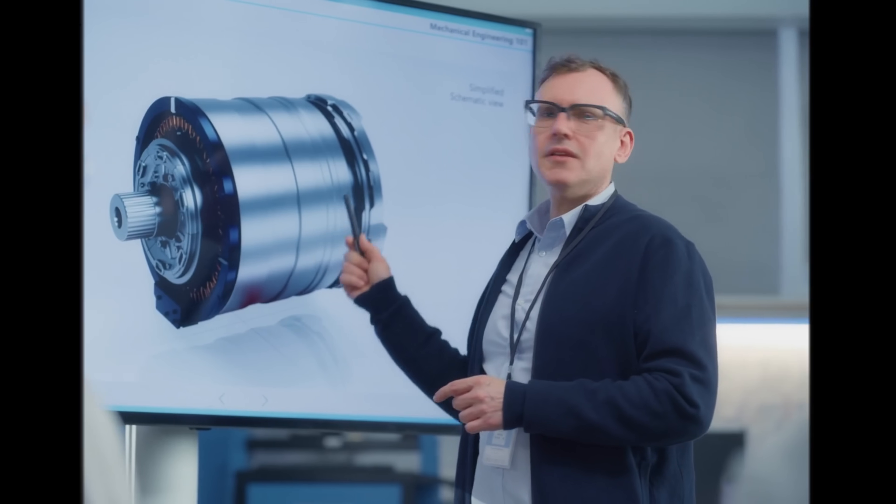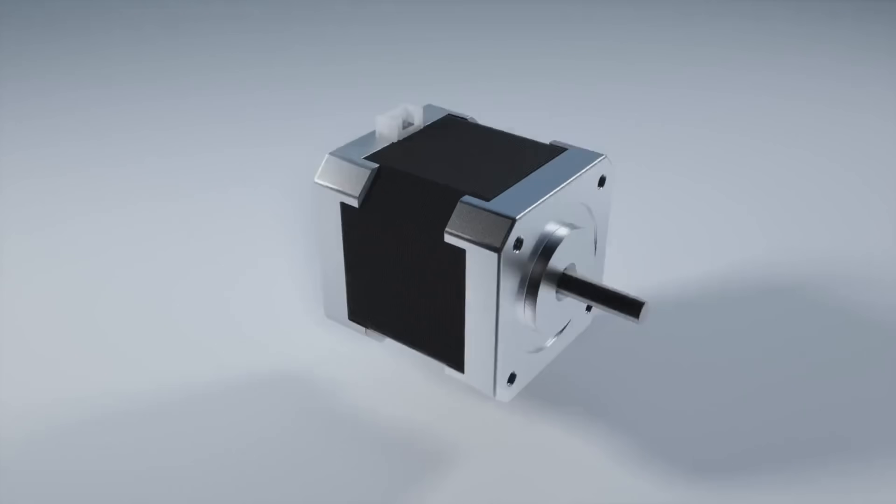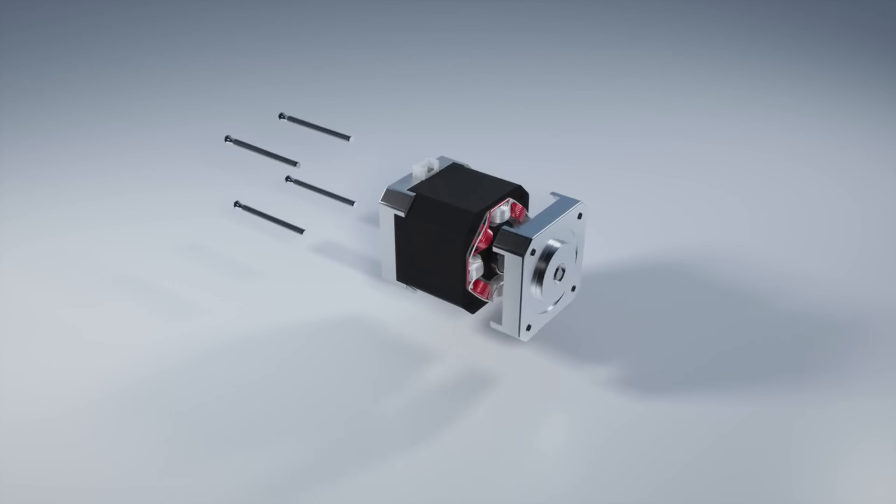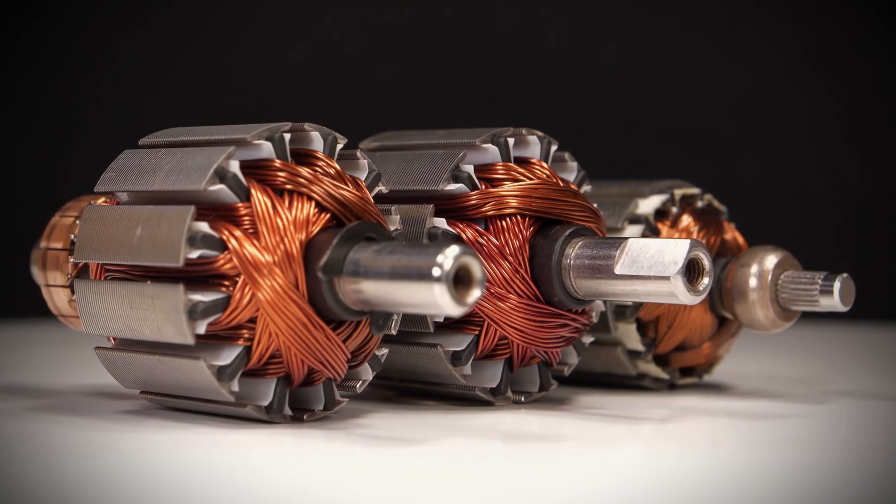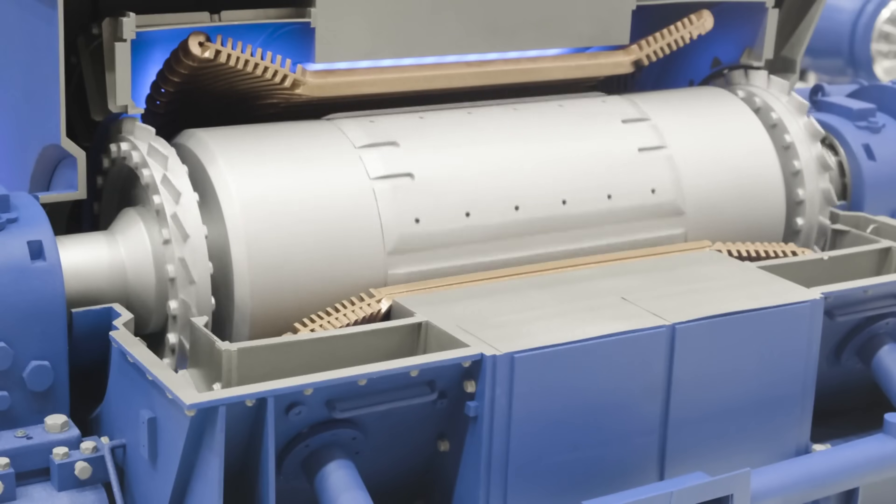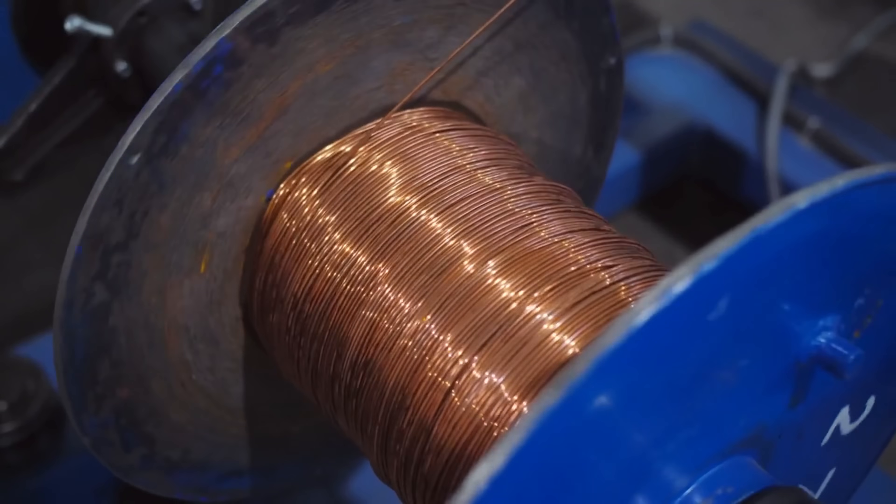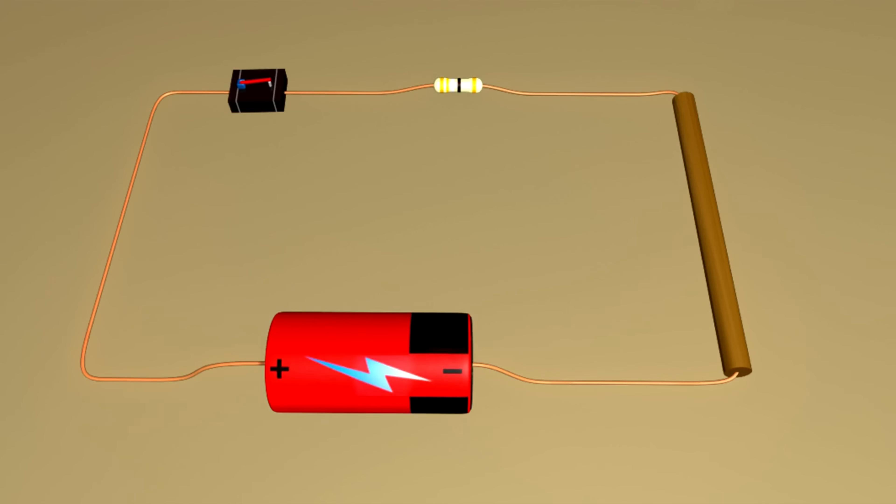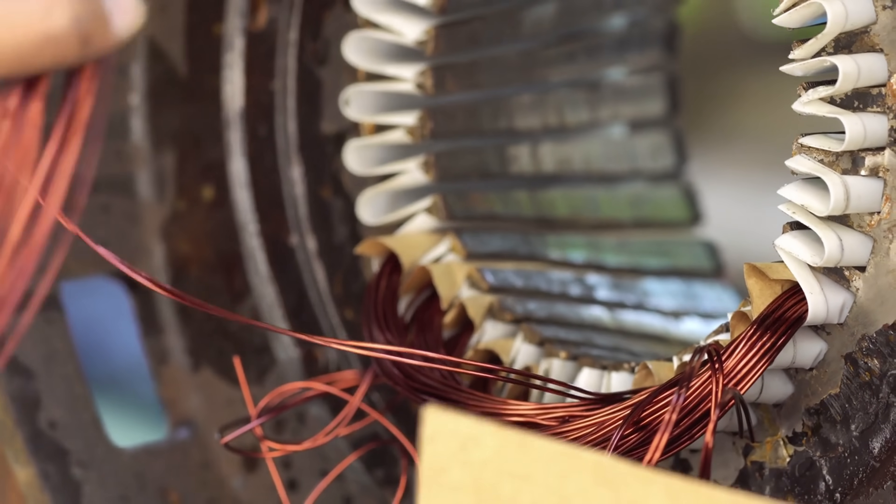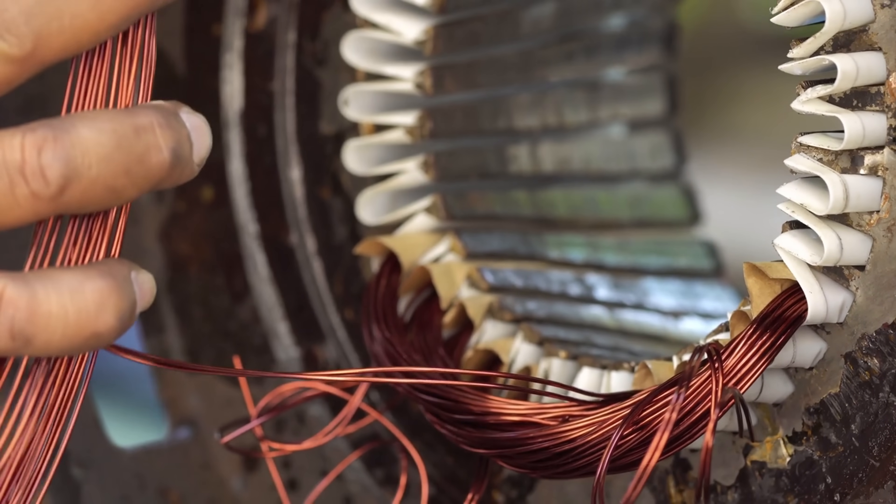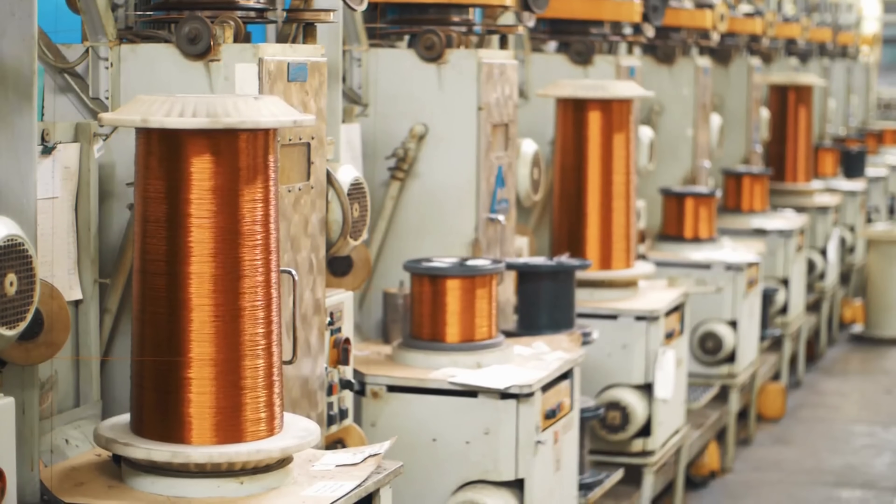To understand how radical this is, let's go back to the basics of how electric motors work. At the core of nearly every motor, from your ceiling fan to a Tesla drivetrain, are metal coils, usually made from copper. These coils carry current and generate magnetic fields, which turn motion into electricity or vice versa. Copper is used because it's highly conductive, reliable, and relatively easy to manufacture.